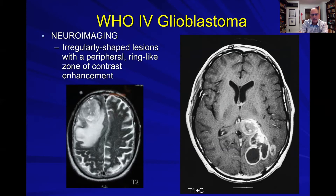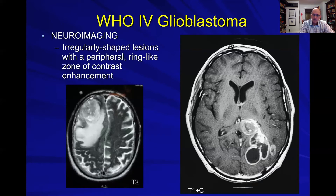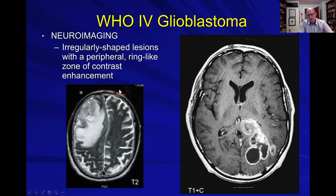The lesions are more irregularly shaped. You still have peripheral ring-like enhancement and a central zone of necrosis. On the T2 sequence you can really see how much edema these malignant tumors can incite. For example, I have a current patient who came in about two weeks ago with a headache, and he has a malignant glioma centered in his insular lobe that spreads into most of his hemisphere. He had so much edema and midline shift that within days he started herniating, leading to an urgent hemicraniectomy. These tumors can change quickly and require aggressive management.